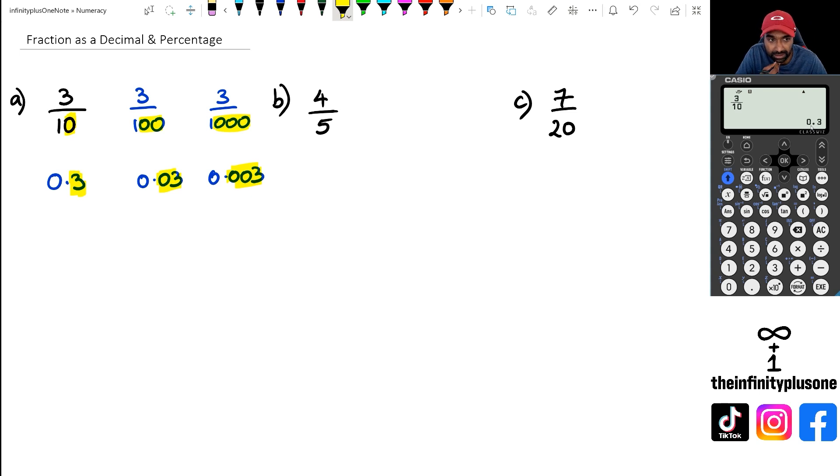So how do we convert now a decimal into percentage, or a fraction into percentage? All you have to do is any time you want to convert it into a percentage, you just multiply the number by 100.